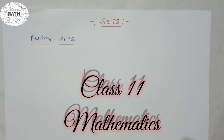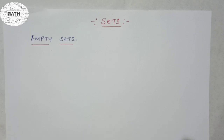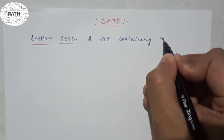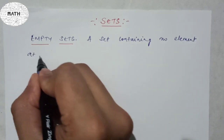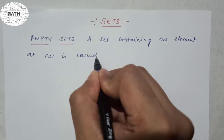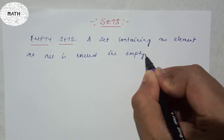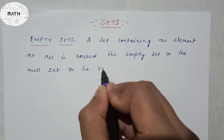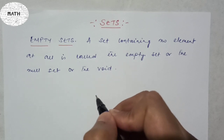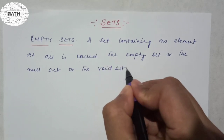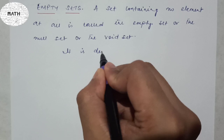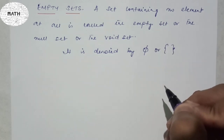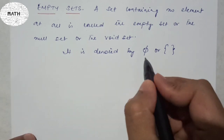Welcome guys. In today's video we're going to study sets and different kinds of sets. The first one is the empty set. A set containing no element at all is called the empty set, or the null set, or the void set. It is denoted by phi or curly brackets with nothing inside.